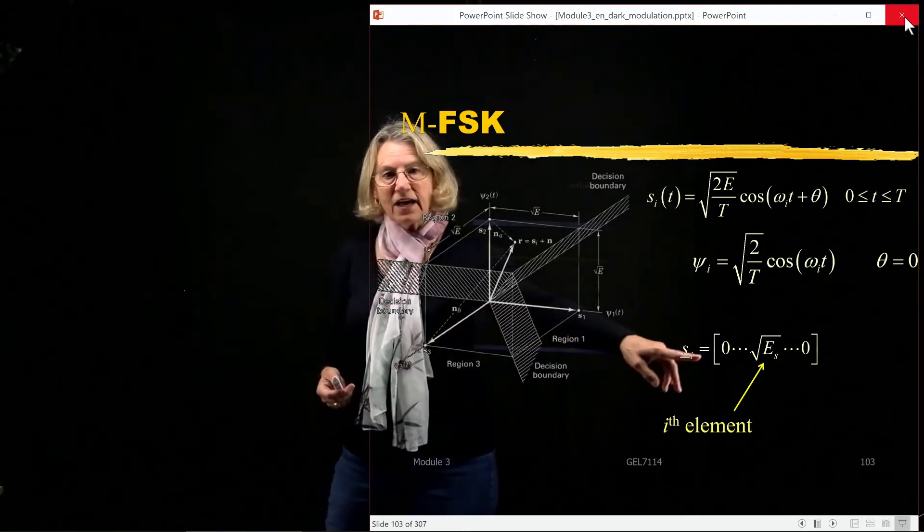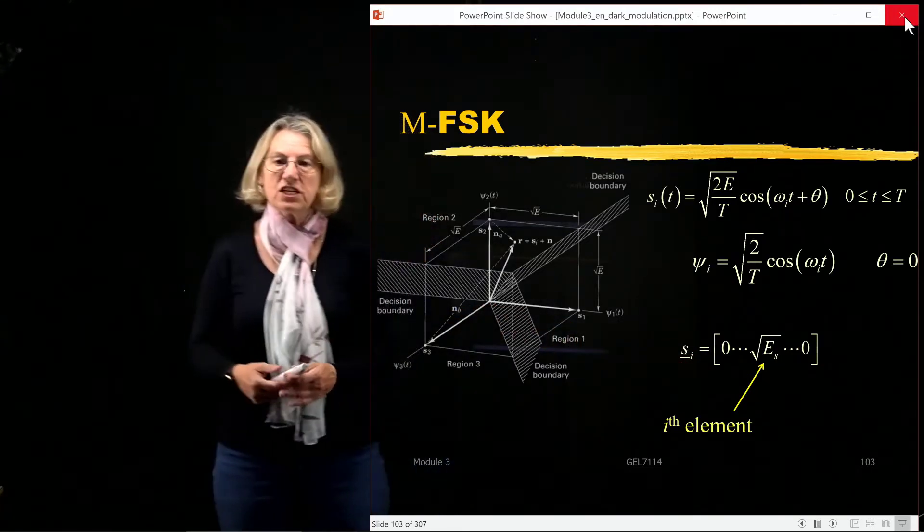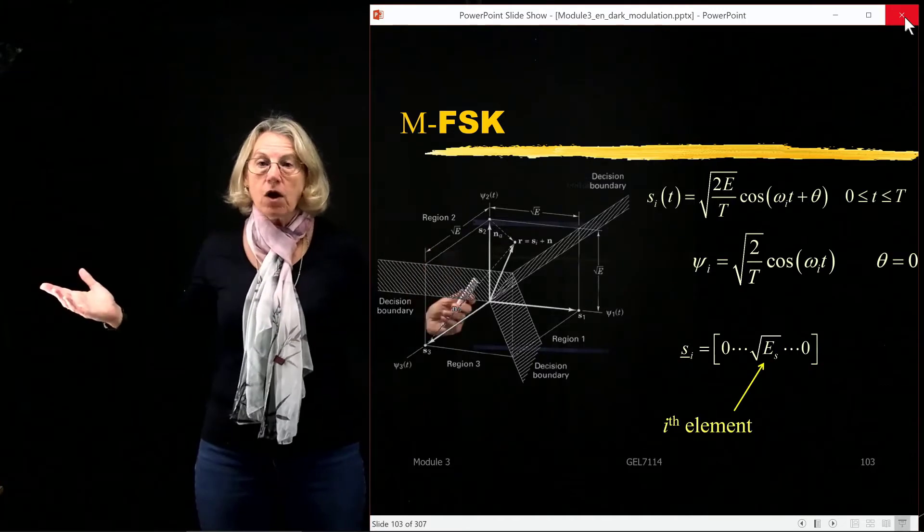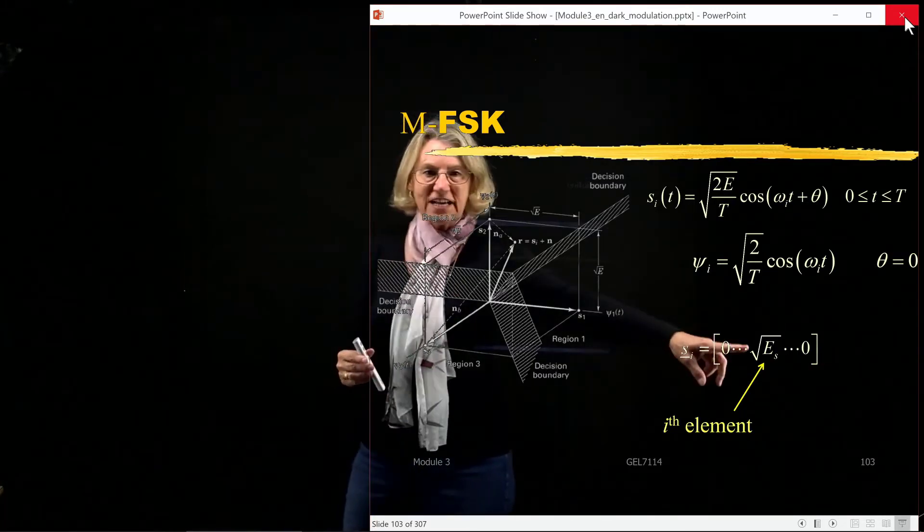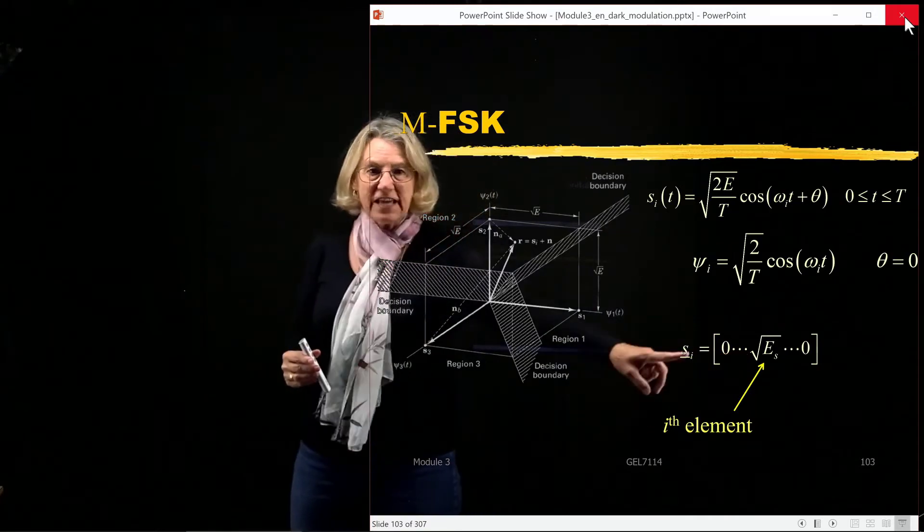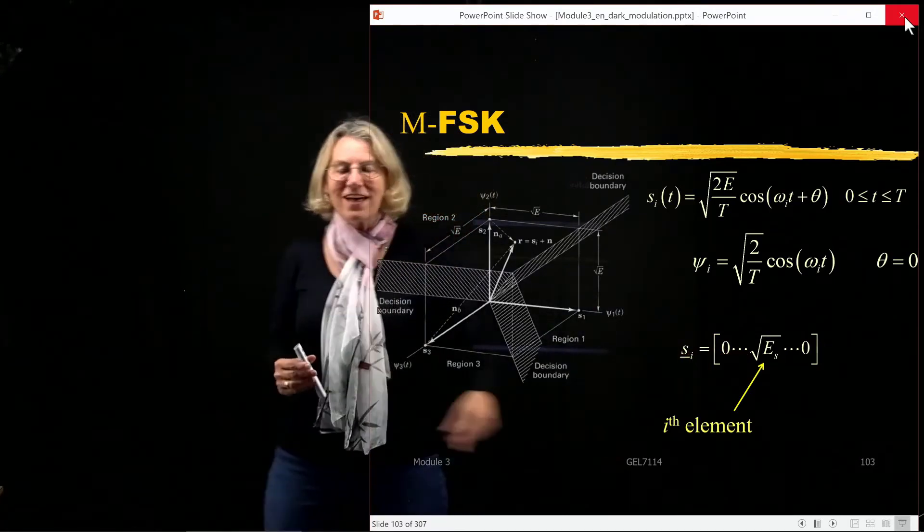That means that if I look at the vector representation, it's going to be a vector of all zeros except for one. One of the values is going to have the energy of that symbol on it. So for the i-th symbol, it'll be the i-th element of the vector,